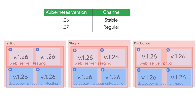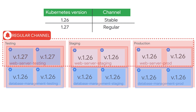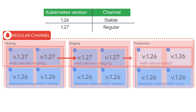Let's also assume version 1.27 is now available in the regular release channel. Since the clusters in the web server scope are enrolled in this channel, GKE will first upgrade those clusters in the testing fleet. Once the clusters are upgraded, and since there is no soaking time specified, GKE will begin upgrading the clusters in the staging fleet, and then move on to the production fleet.